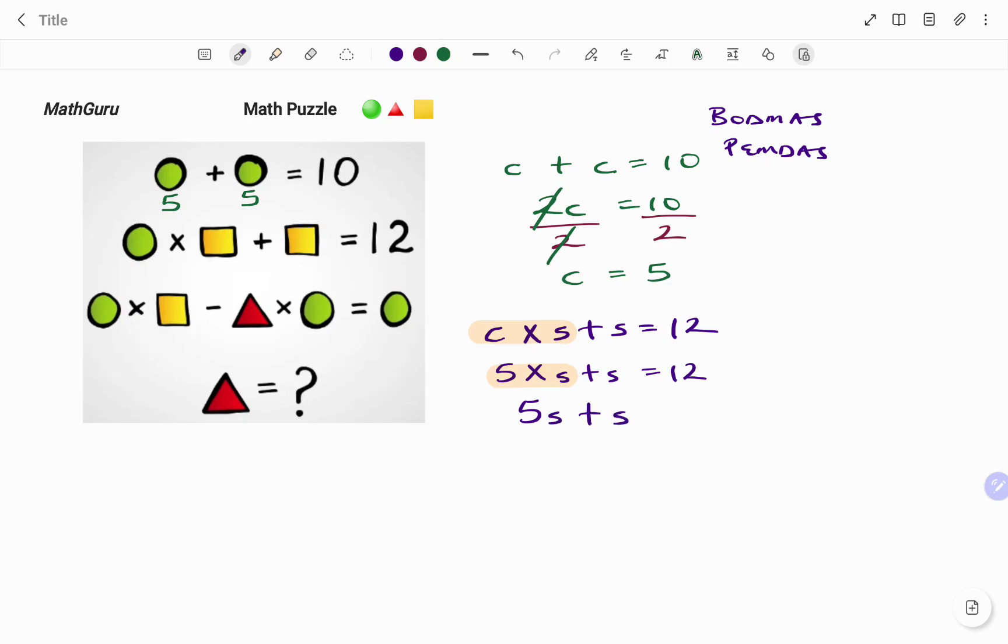Plus another S, plus another S equals to 12. And if I add that together, 5S plus 1S is 6S equals to 12. And so therefore to find the value of S, I'll divide both sides by 6. I have 6 and 6, 1. So therefore the value of S or the square equals 12 divided by 6, that's 2. So on the second line I have my circle which is 5, and then I have my squares that's 2 and 2. And a quick check will be 5 times 2, that's 10, 10 plus 2, that's 12.